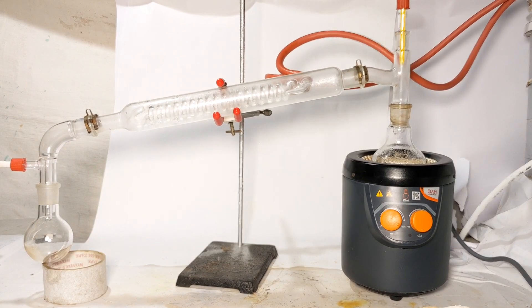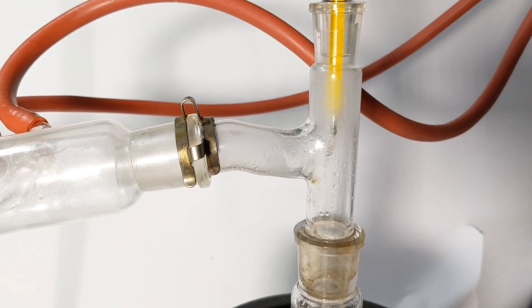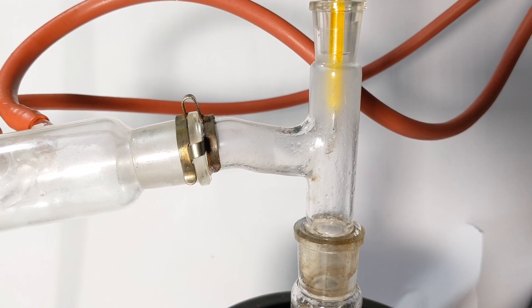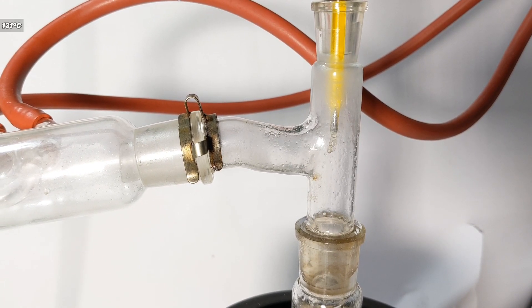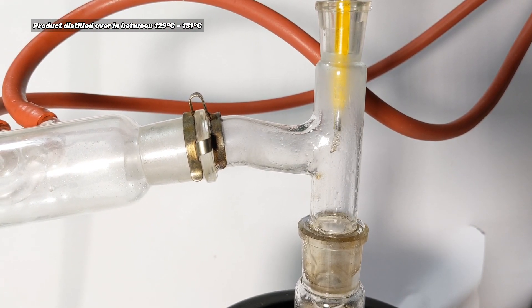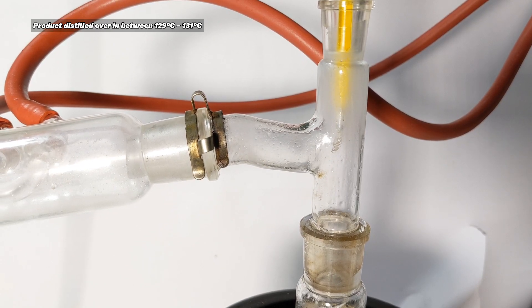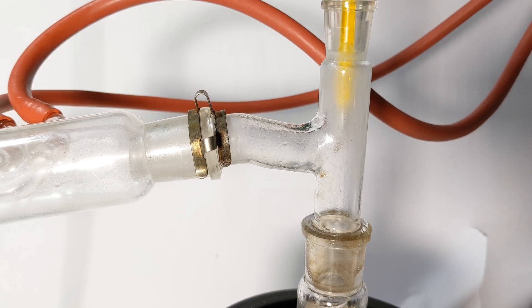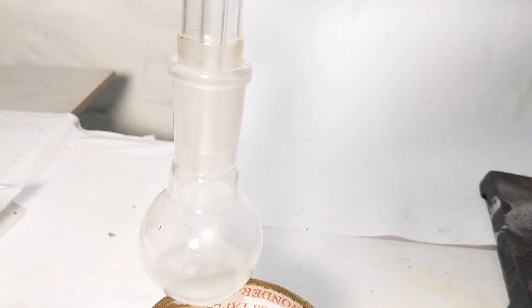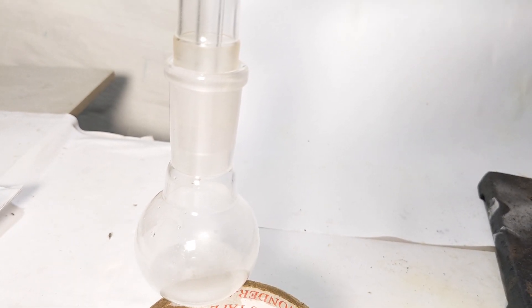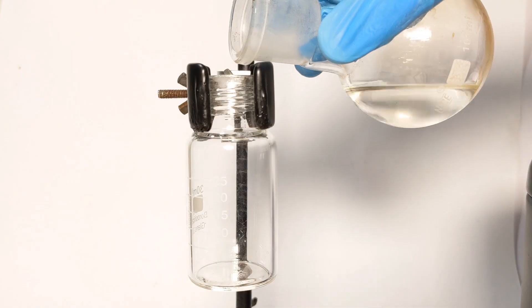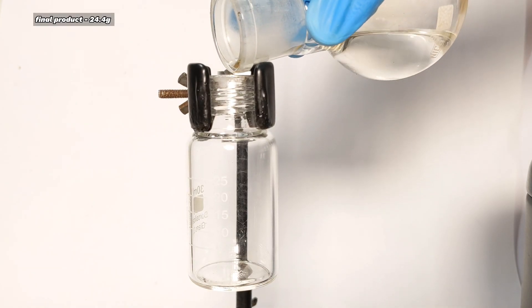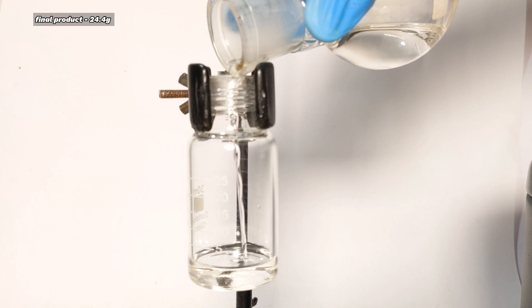When the temperature rose to around 129 degrees C, a new receiving flask was attached at the receiving end and n-butyl iodide was collected in a temperature range of 129 to 131 degrees C. The final yield was 24.4 grams which is roughly 15 ml of the product.